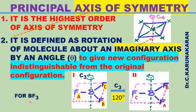For example, let us consider BF3 molecule. This is the structure of BF3 molecule. This is an imaginary axis. Rotation of the molecule in anti-clockwise direction — on C3 rotation, this fluorine comes here at an angle of 120 degrees. E comes here, A comes here, and B goes here. This is the original configuration.